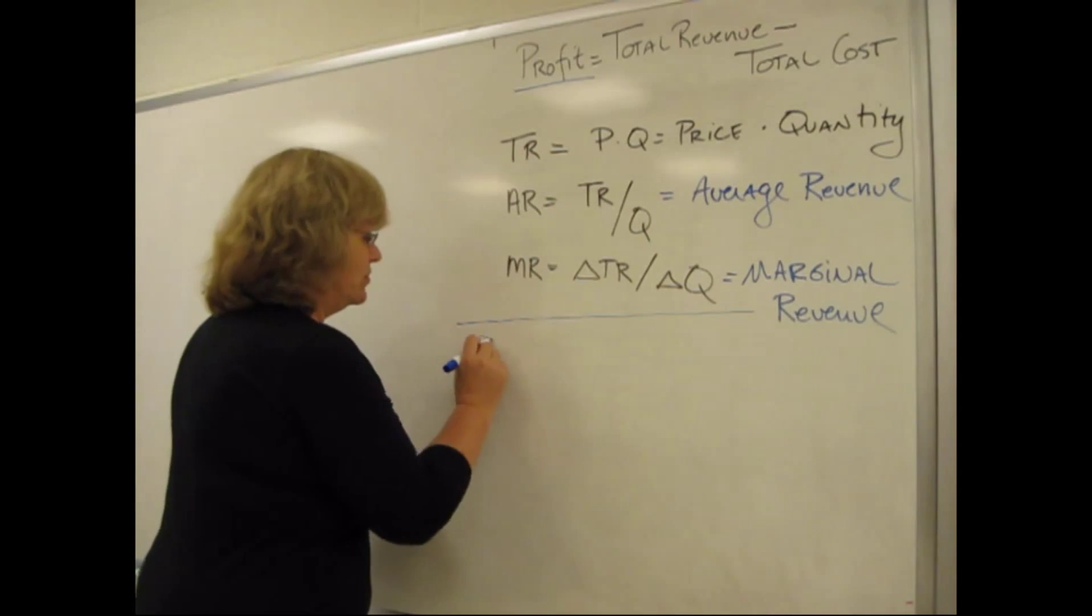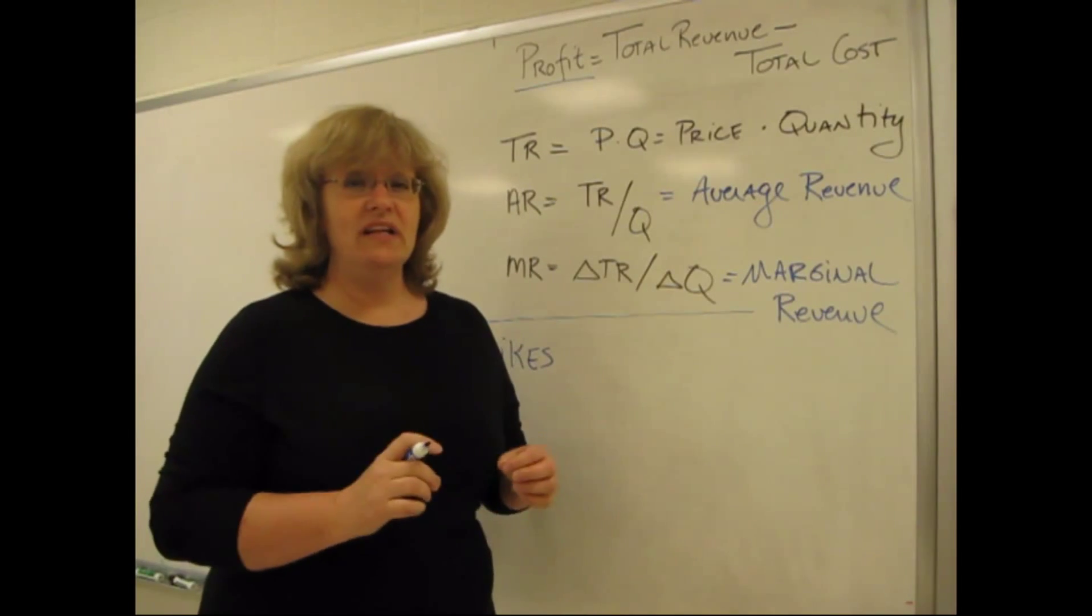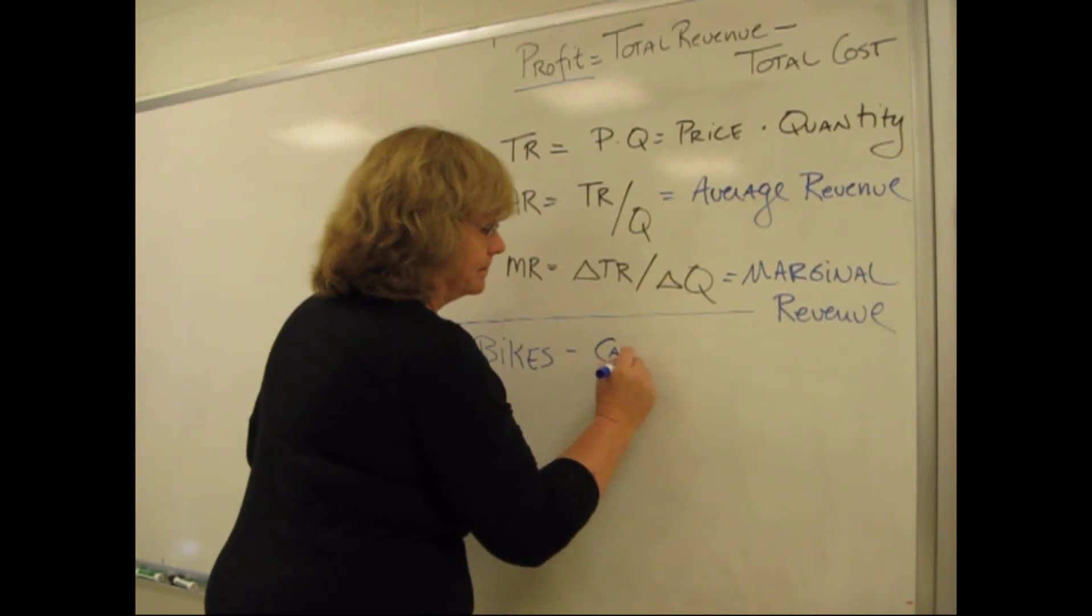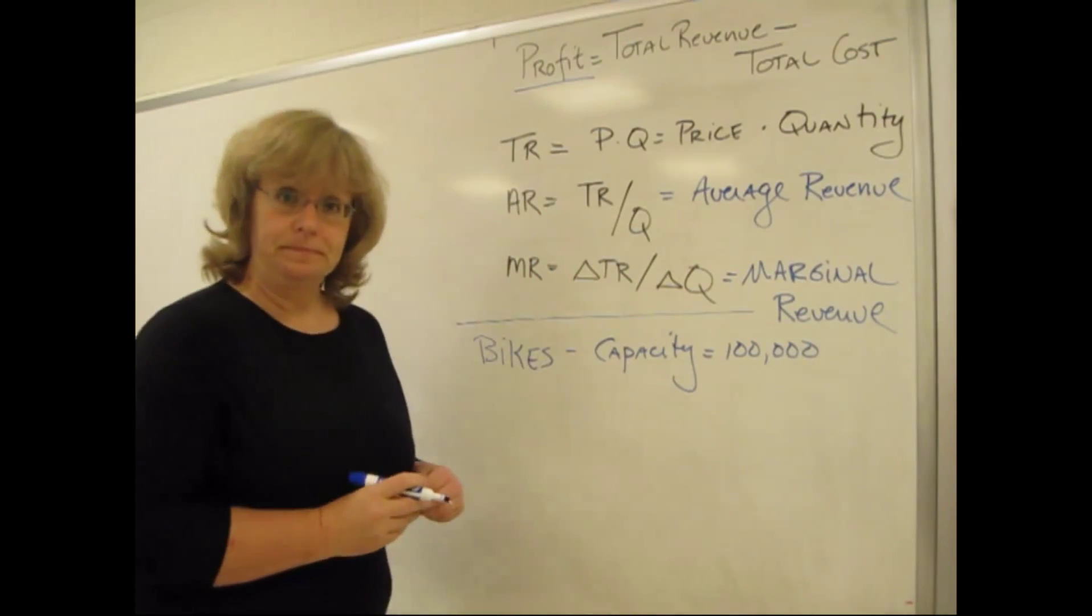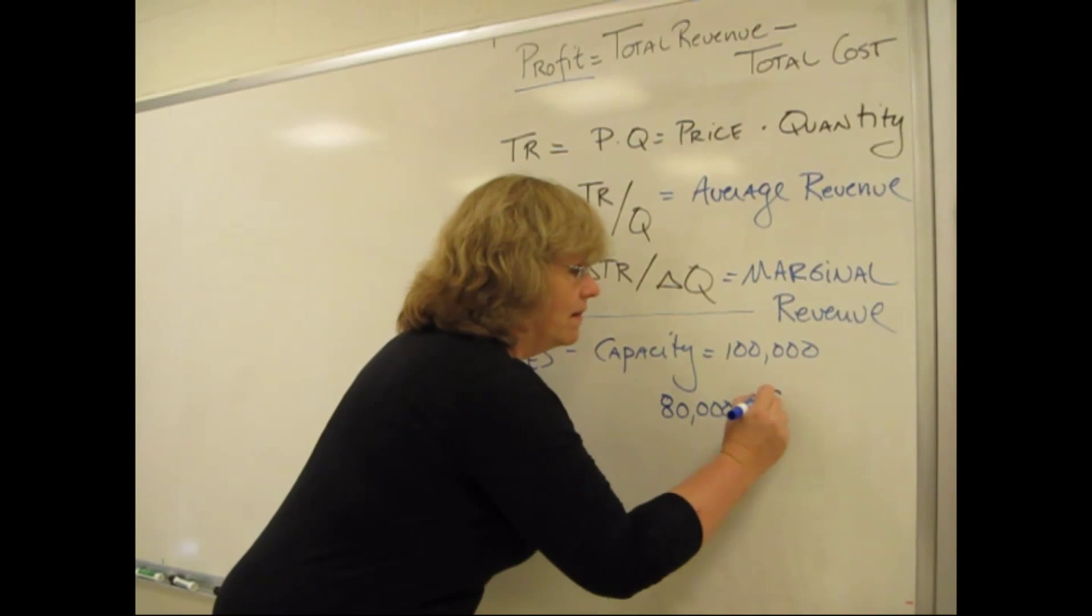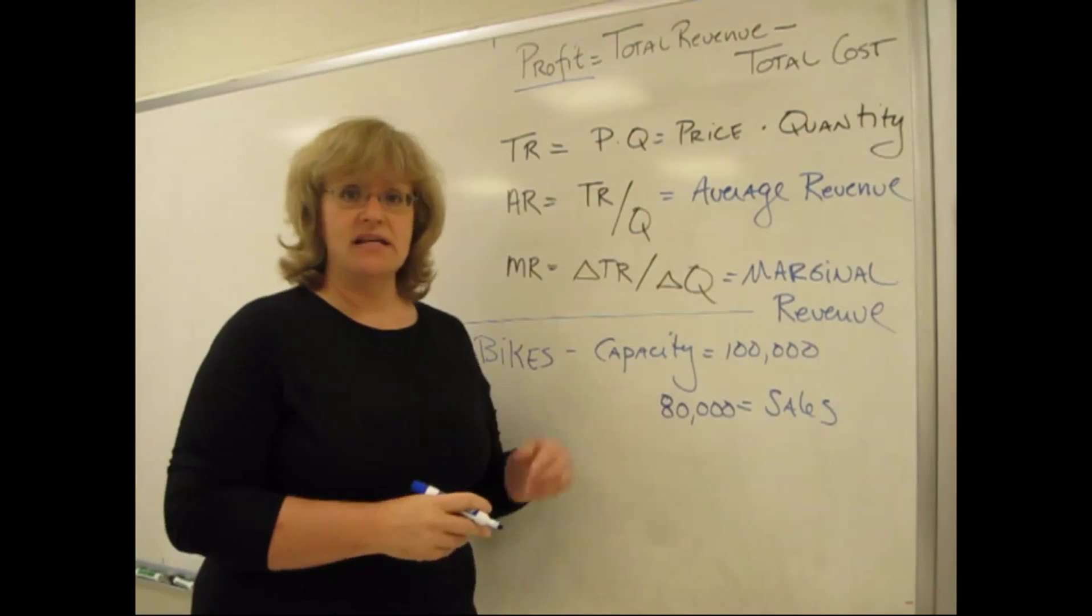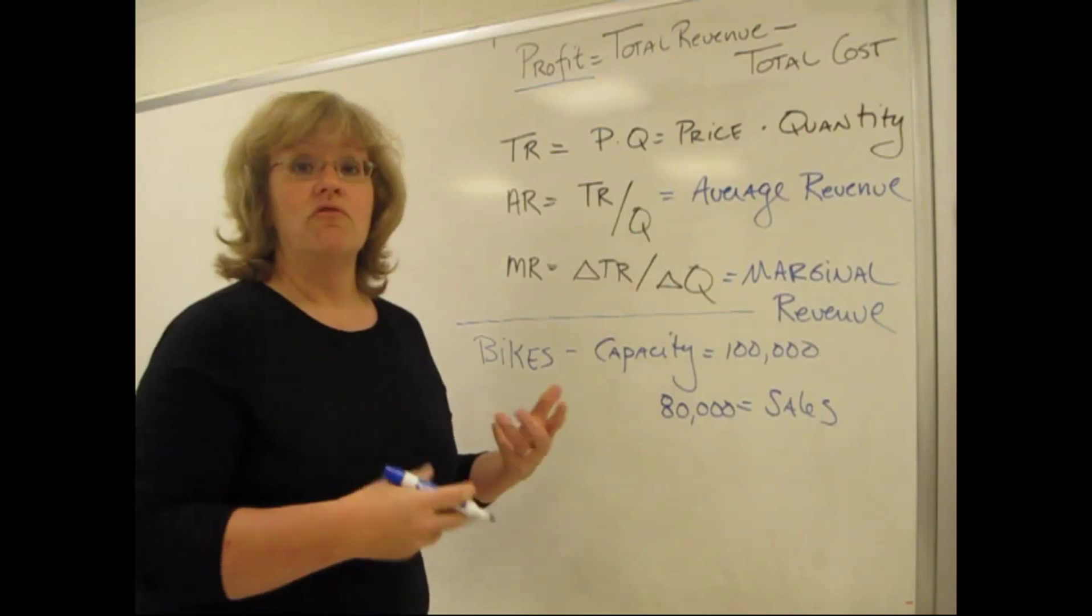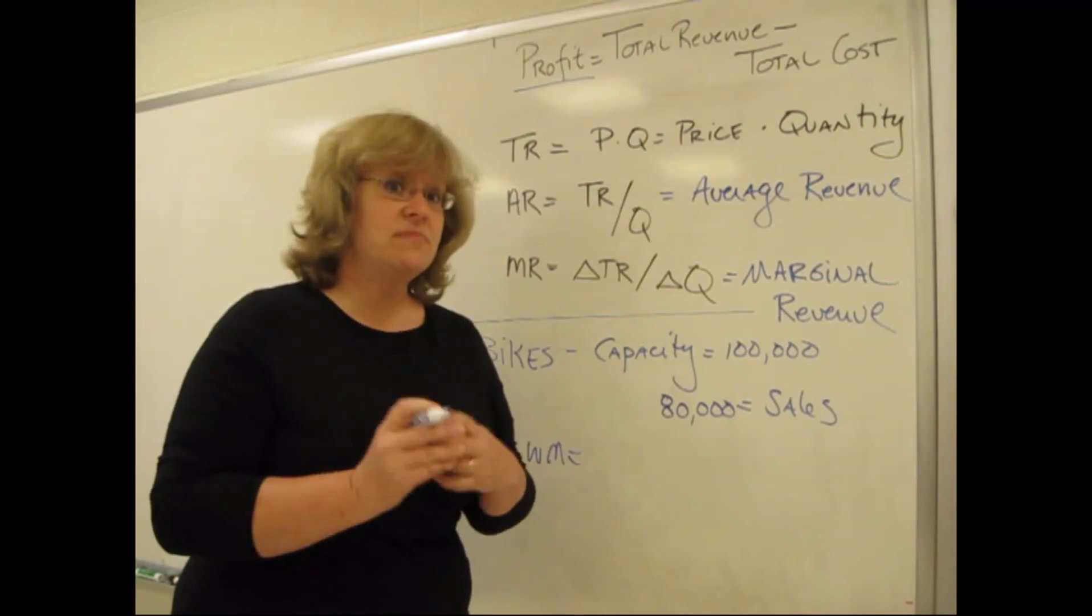Suppose that we have a company that produces bikes. And this company is known for really high quality level of bike. They have a capacity in their factory to produce about 100,000 bikes a year. Right now, they're doing pretty well. They're selling 80,000, not $80,000, but 80,000 bikes. So they've got a little excess capacity, but they're doing just fine. Now suppose that they get presented with a really interesting deal from one of the big box retailers, like perhaps Walmart.